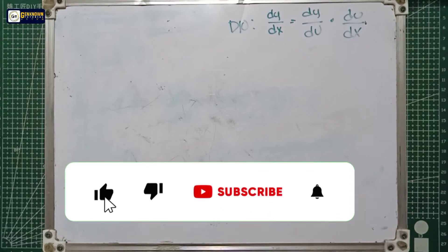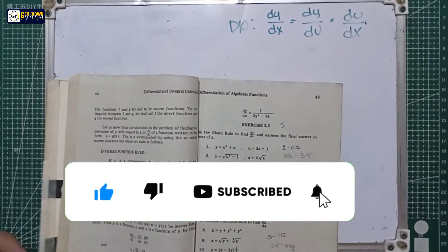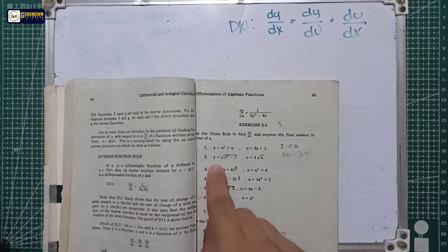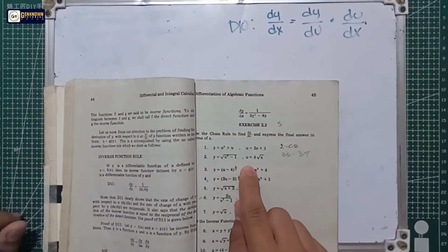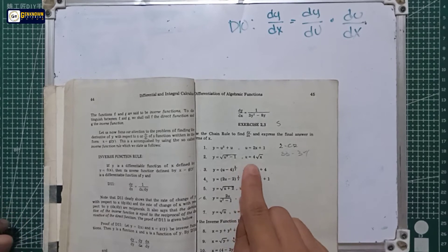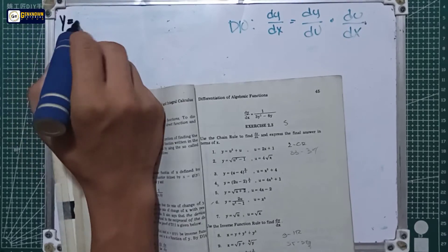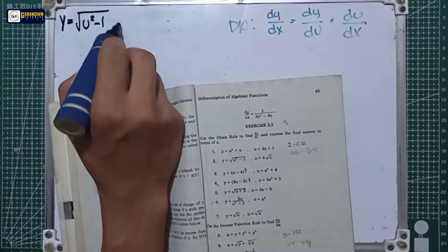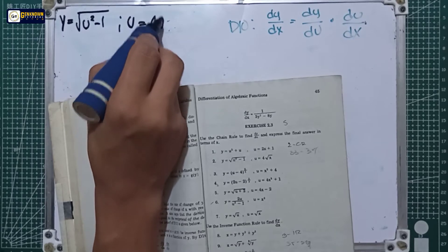We are now in the second problem of the chain rule. In number 2 we have the square root of y is equal to the square root of u squared minus 1, and for the u equation we have u is equal to 4 square root of x.